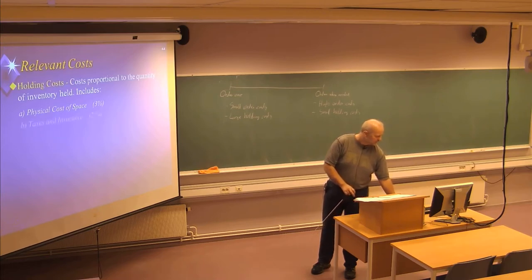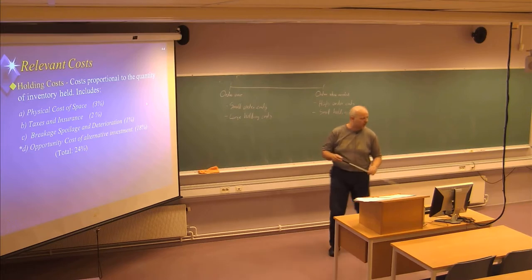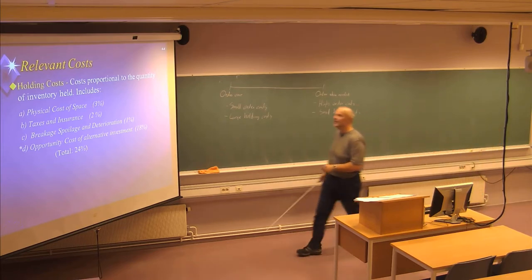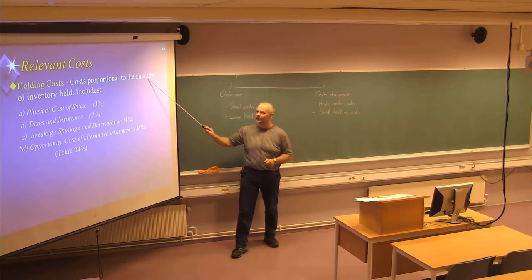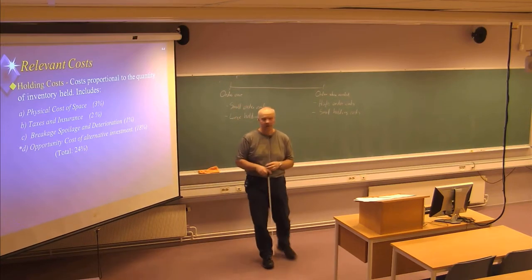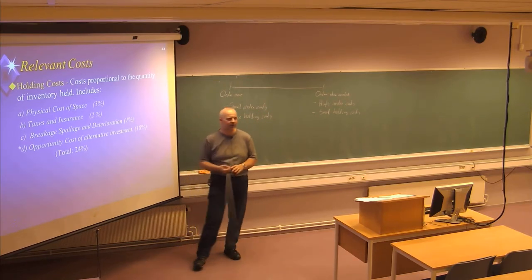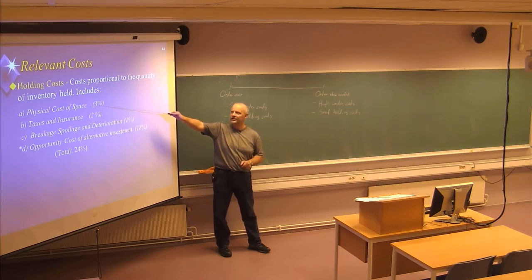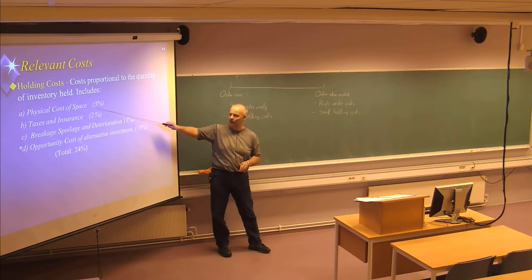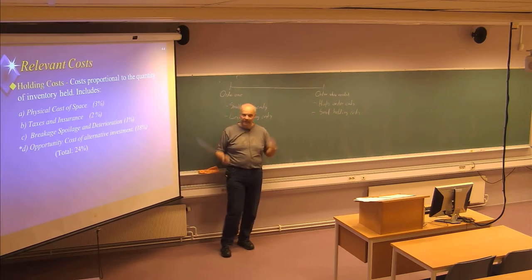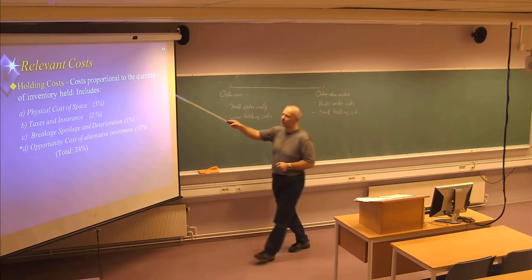Now let's talk about the relevant costs. One type is the holding cost, which is proportional to the quantity of inventory held. There are four different components: the physical cost of space — if you are storing inventory, the storage area might be costly — said to be 3% of the value of the item. Taxes and insurance are another part, said to be 2%.